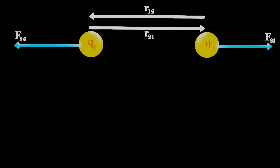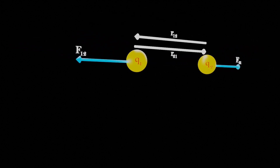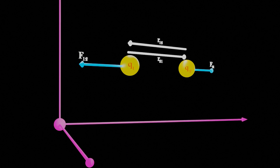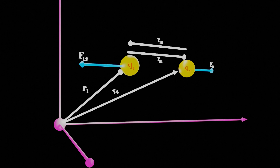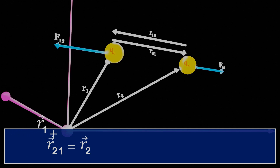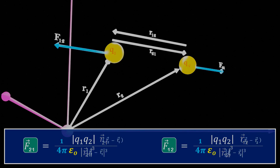Now let's represent R12 and R21 in a different way. We have two charges Q1 and Q2 in space. Q1 has a position in space denoted by position vector R1 from the origin. Similarly, Q2 also has a position in space denoted by position vector R2. We also know the concept of vector addition, where the vector R1 plus R21 equals R2. This equation can be written as R21 equals R2 minus R1. Similarly, the vector R12 can be written as R1 minus R2. Let's now place the values of the position vectors R12 and R21 into the force equation to get the complete vector form of Coulomb force.